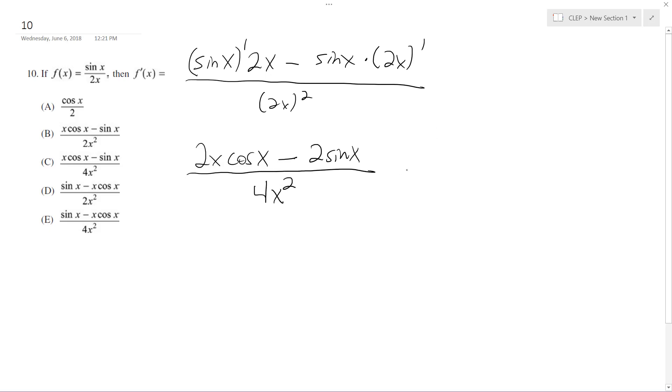So what we can do is factor out a 2. We get 2 times (x cosine x minus sine of x) all over 2 times 2x squared. So we just cancel